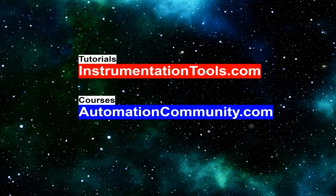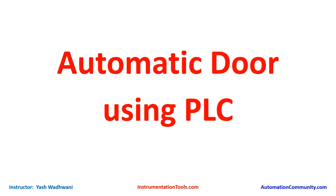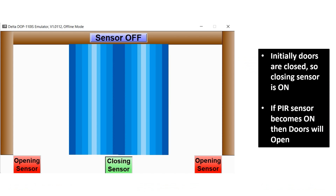Hello friends, welcome to our website automation community.com. Today we are going to see another interesting example: automatic door using PLC. In many organizations you have seen that there is an automatic door which opens when it detects human presence. We have tried to make such a program using PLC.